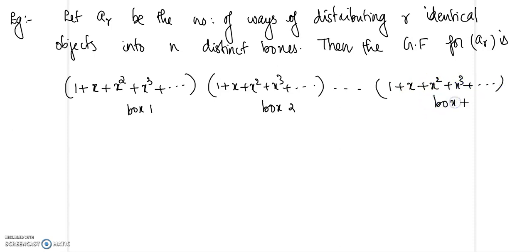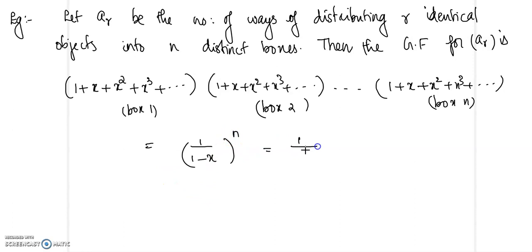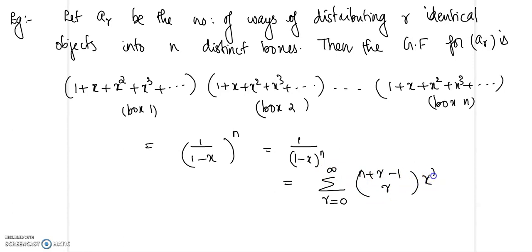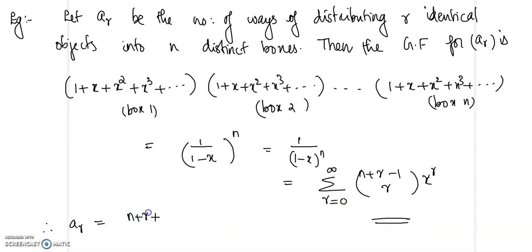Each factor is the expansion for 1/(1−x), so the generating function is 1/(1−x)^n. This has the expansion: summation r = 0 to infinity of C(n+r−1, r) · x^r. Therefore, the number of ways of distributing r identical objects into n distinct boxes is a_r = C(n+r−1, r).